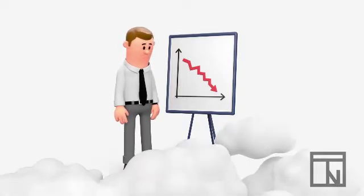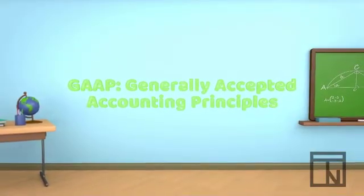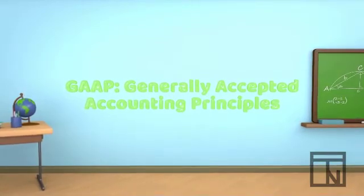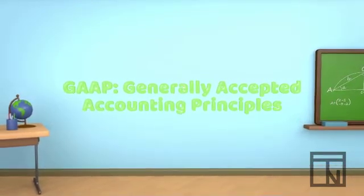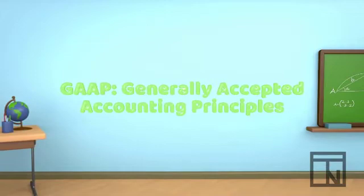To answer this question, we need to look at GAAP rules. GAAP, or the Generally Accepted Accounting Principles, are the rules that govern how business owners like Bob track and report their accounting information.